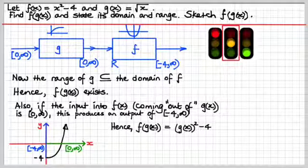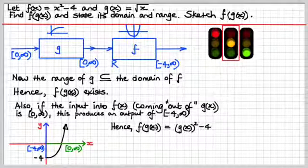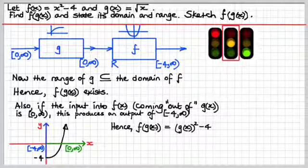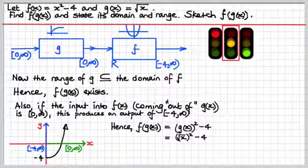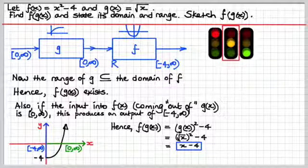f of g of x is not x squared minus 4, but g of x all squared minus 4. We're identifying the function now. And that's going to be root x all squared minus 4, which is just x minus 4.